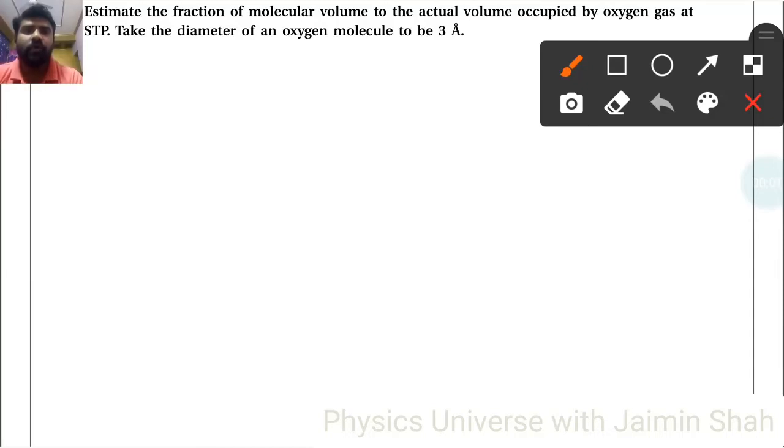Estimate the fraction of molecular volume to the actual volume occupied by oxygen gas at STP. Take the diameter of an oxygen molecule to be 3 angstrom, so the radius is 1.5 × 10^-10 meter.